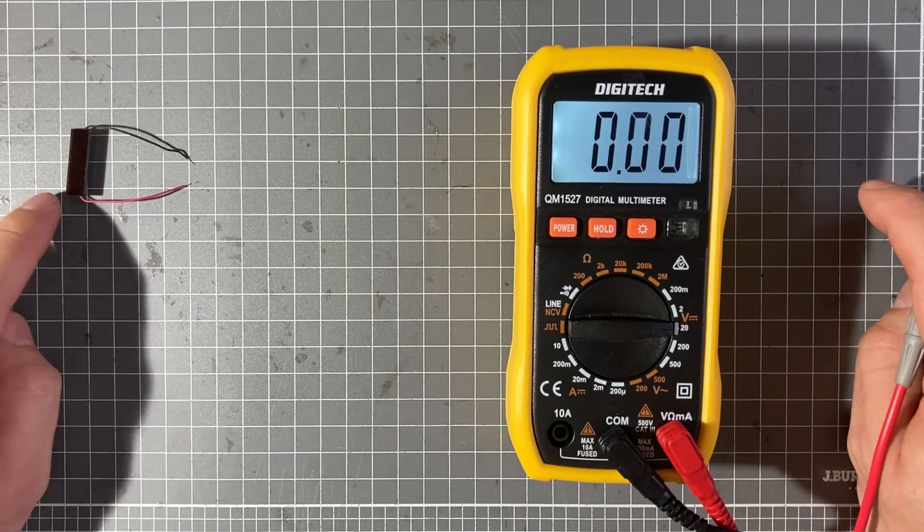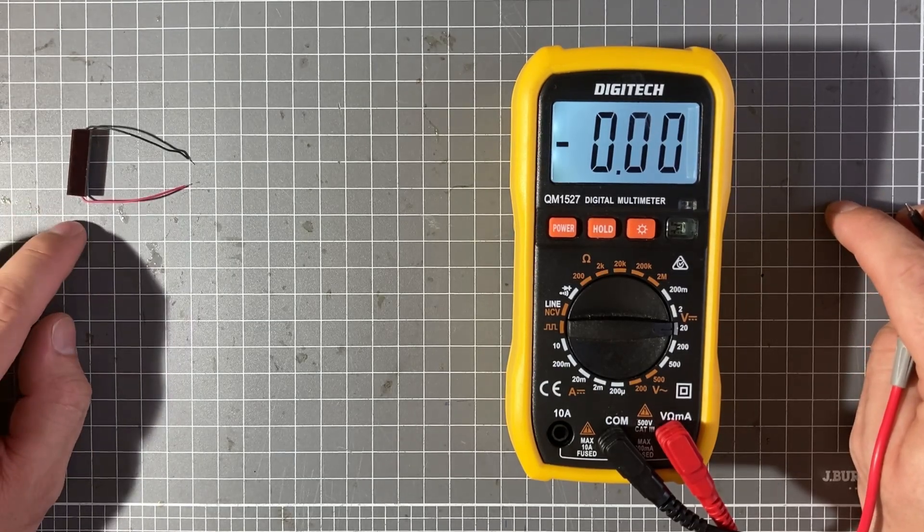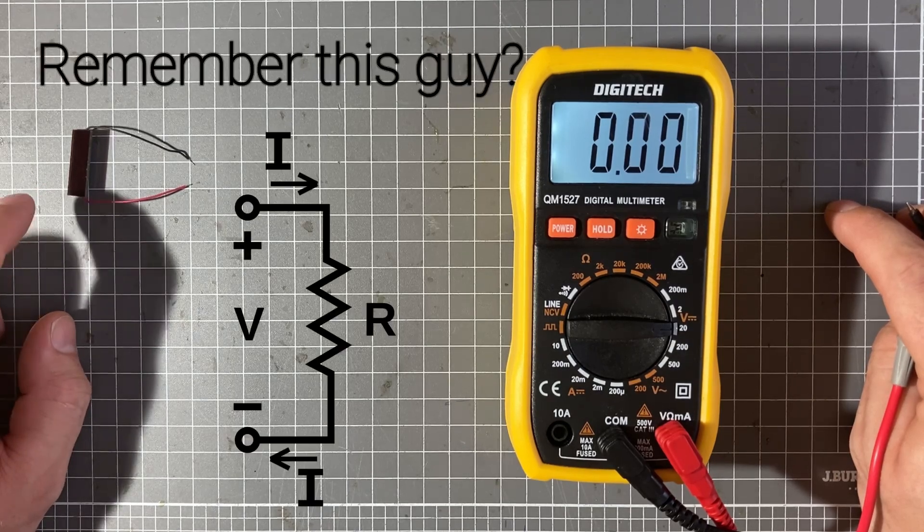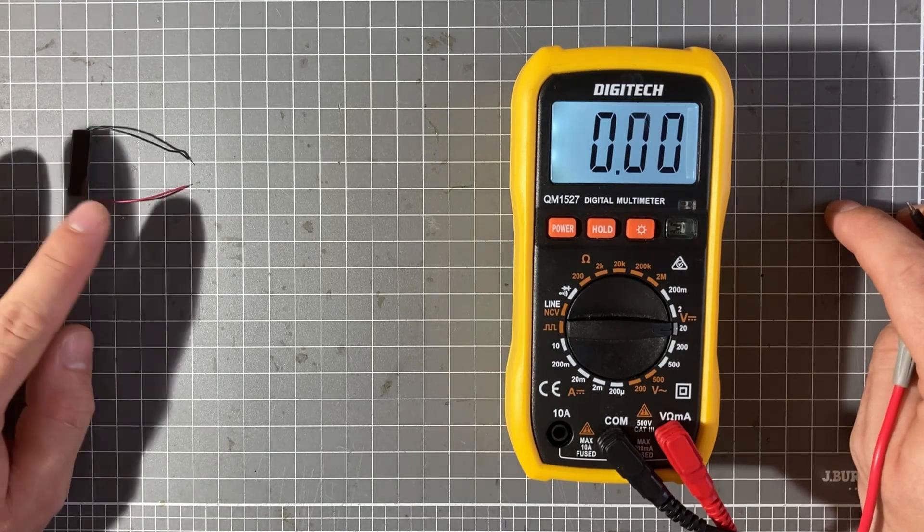The problem is this does it at a tiny fraction of the current, milliamps maybe. If you were to connect this to a motor that voltage would drop to zero pretty quickly. So we need a way of taking the voltage that the cell provides and convert it into current.